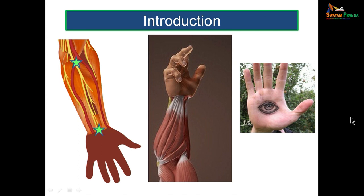What is the median nerve? Why is it called so? The term median means it lies in the midline. The median nerve lies in the midline of the forearm, as indicated by these two stars which highlight it here. So it is lying in the midline of the forearm and is therefore called the median nerve. It is also called the laborer's nerve — because it supplies the flexor muscles present in the forearm, which are the large flexors that help in doing manual labor.